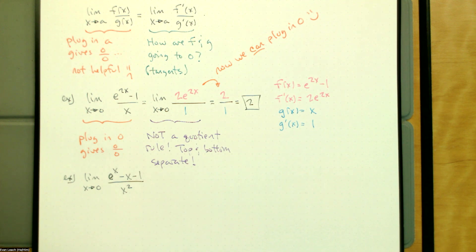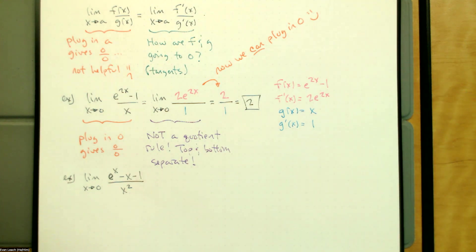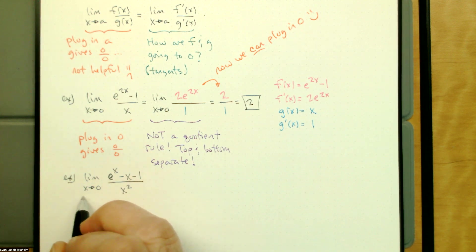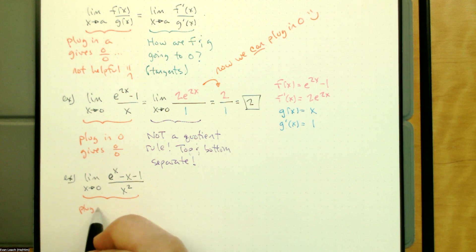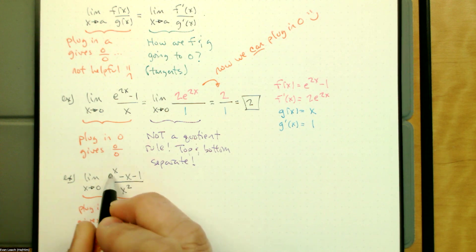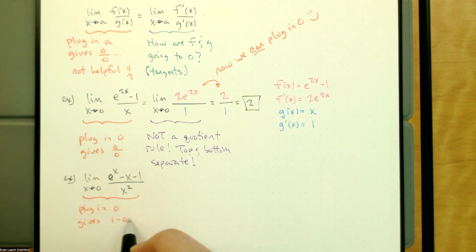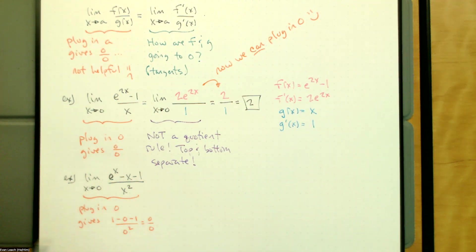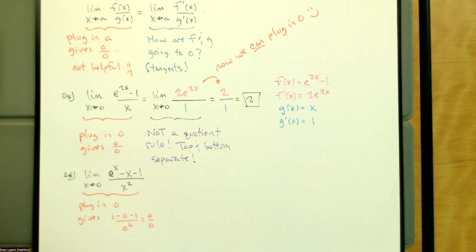Notice that in the numerator, when I take the derivative, it's still going to give us something that evaluates to zero at x=0. In the denominator, when we take the derivative, we're still going to have that x. But if we take a second derivative, we're going to have just a 2, and that's going to change things. If we plug in zero: e^0 − 0 − 1 over 0 squared gives 0 over 0. I don't know what 0 over 0 is in this case — it depends on how the numerator and denominator are getting to zero.